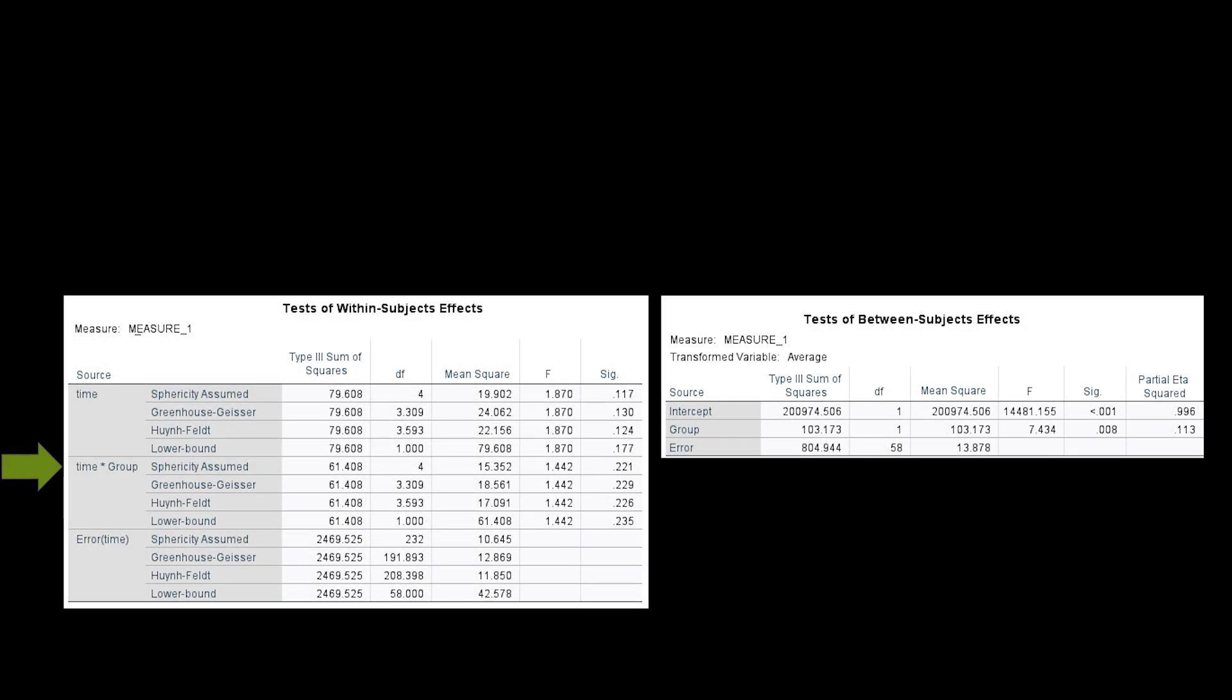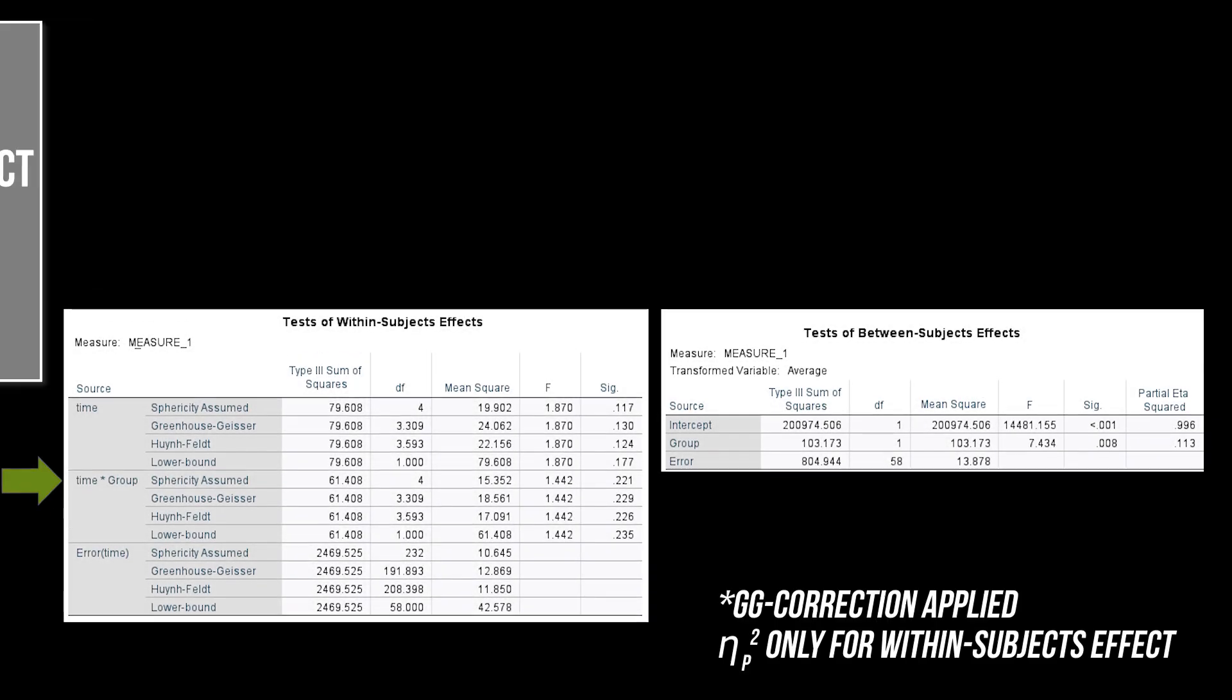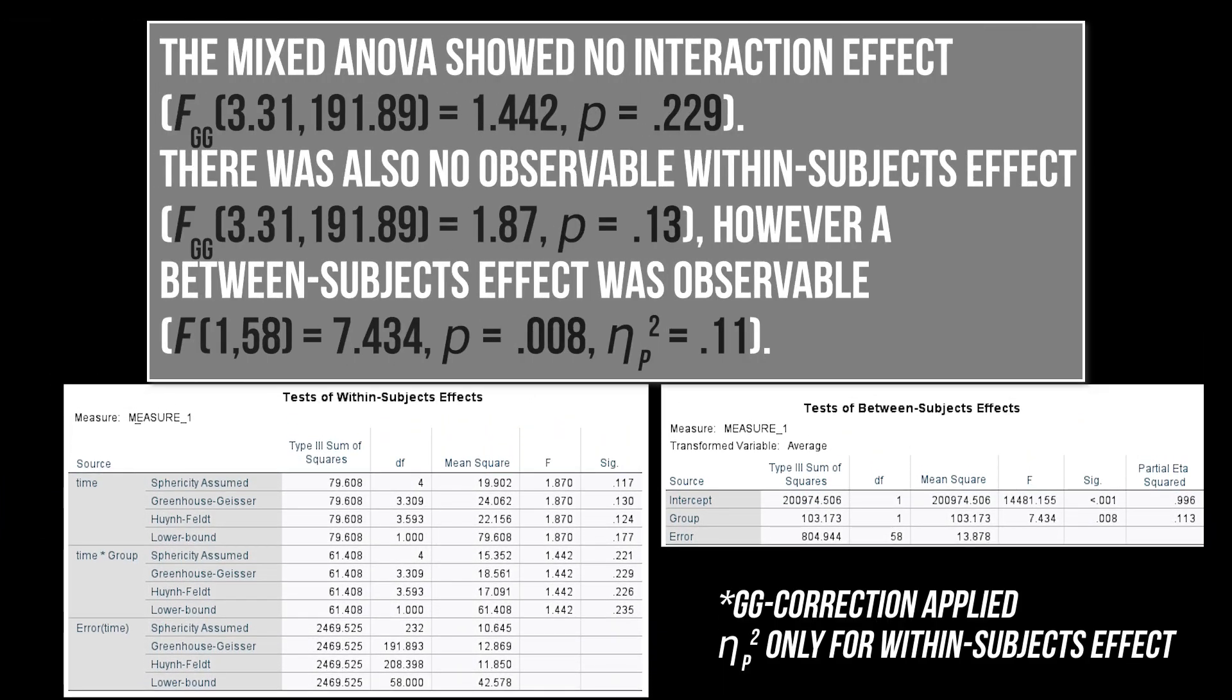Scenario 3: If no interaction effect between the within subjects and between subjects effect could be observed, the main effects are then reported, regardless of their significance. In addition, the non-significance of the interaction effect is also reported.